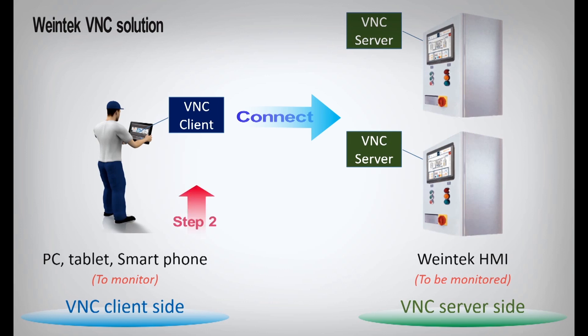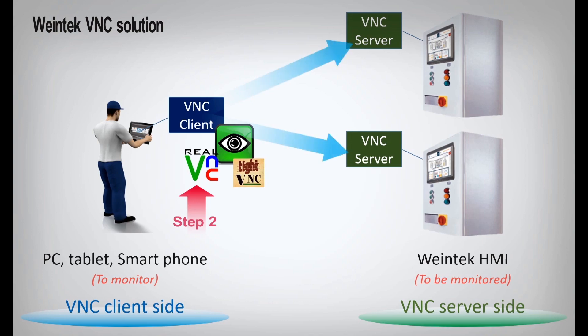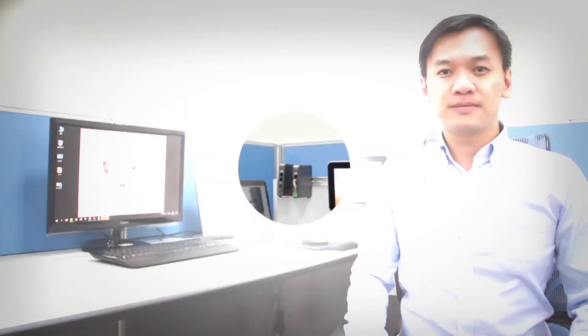On PCs, wireless tablets, or smartphones, you can download any third-party BNC client apps — such as RealVNC, UltraVNC, or TightVNC — to enable you to control and monitor the remote HMI. Another way to connect to the remote HMI is running BNC Viewer on the client-side HMI. BNC Viewer allows you to monitor two or more machines from the same display, so there's no need for the operator to repeatedly walk through the entire factory anymore.